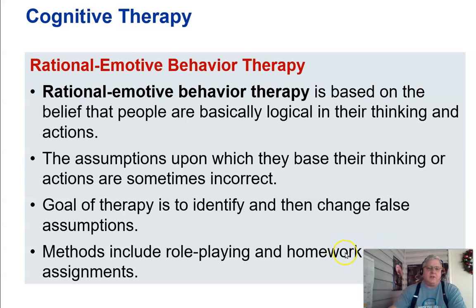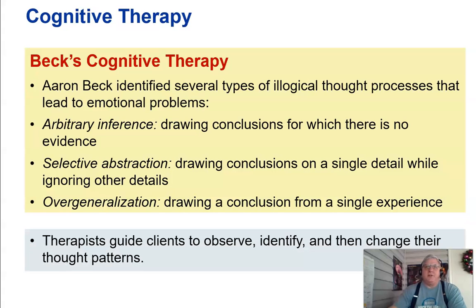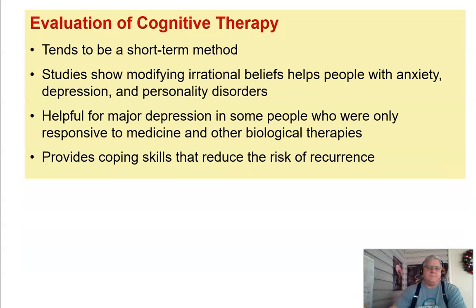Methods of rational emotive behavior therapy include role-playing and homework assignments. Aaron Beck identified several types of illogical thought processes that lead to emotional problems: arbitrary inference is drawing conclusions for which there is no evidence; selective abstraction is drawing conclusions from a single detail while ignoring others; overgeneralization is drawing a conclusion from a single experience. Therapists guide clients to observe, identify, and change their thought patterns. Cognitive therapy tends to be a short-term method, effective for anxiety, depression, and personality disorders, and provides coping skills that reduce the risk of recurrence.